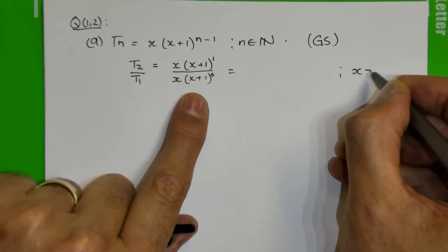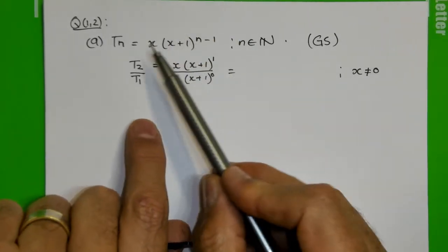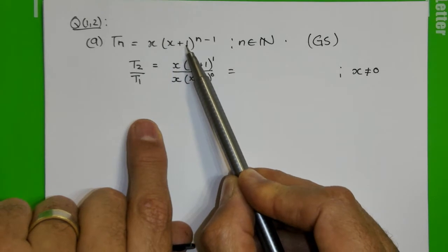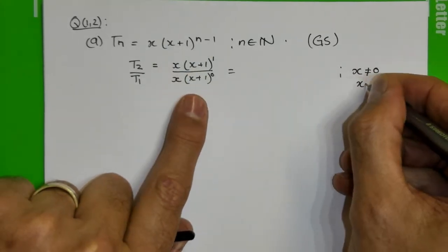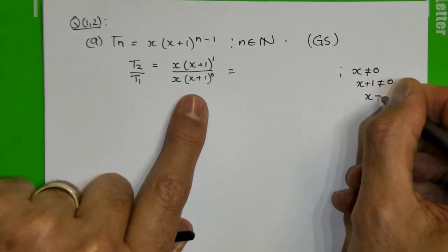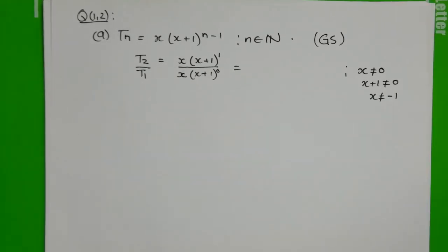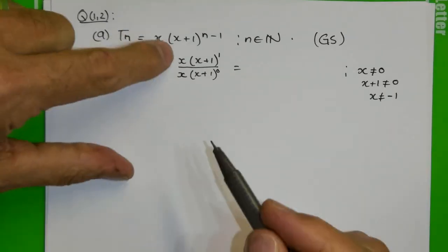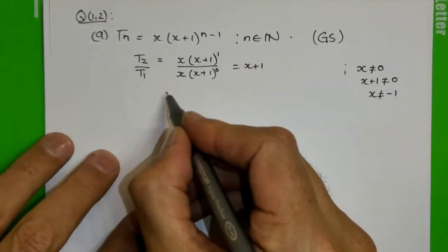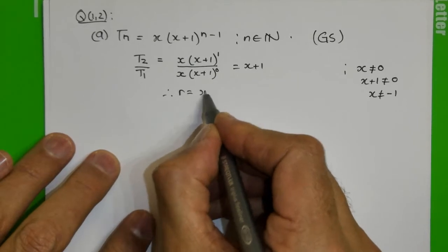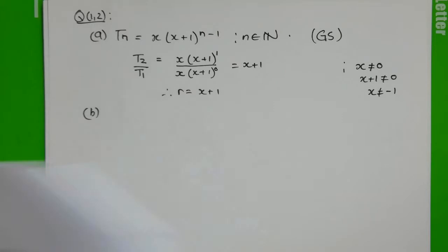So just remind ourselves, x is not allowed to be 0. If x is 0, then you're going to have a constant sequence. So we've got to exclude x is 0, and also x plus 1 cannot be 0. So whatever we get, x cannot be minus 1 as well. If we do our division, the x divides the x, this is 1, so I'm left with x plus 1. So my constant ratio is x plus 1. That was for a beautiful three marks.